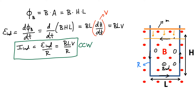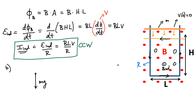Now for Part B: find the terminal velocity. Initially the velocity at time zero is zero. However, as the bar starts to fall, there is an induced current, and we know that an induced current in a magnetic field produces a magnetic force acting on the wire. Let's do a free body diagram. The bar has weight Mg acting downward. With current I flowing right to left in a magnetic field coming out of the page, there is a magnetic force acting on the wire.